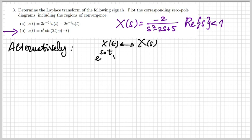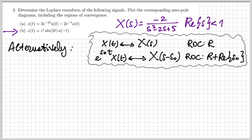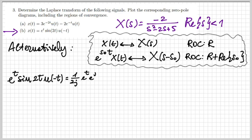I'm noting down the result because I want to show an alternative way to obtain it. I can recall this property of the Laplace transform: a shift by s0 in the s-domain corresponds to multiplication by e to the s0 t in the time domain. The region of convergence is the same ROC shifted by the real part of s0. Using this property I can obtain the same result through a different reasoning.